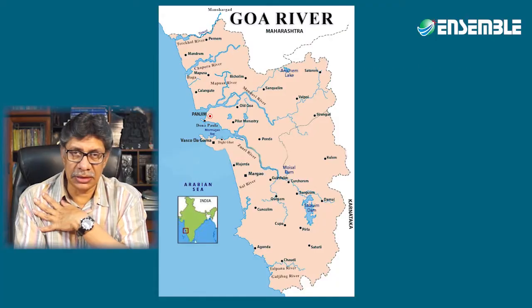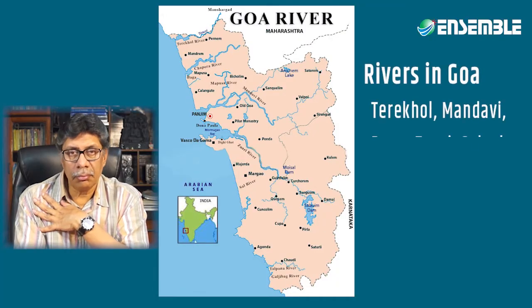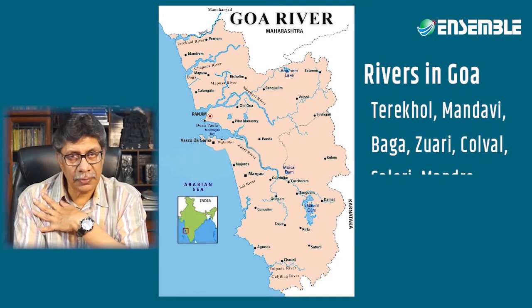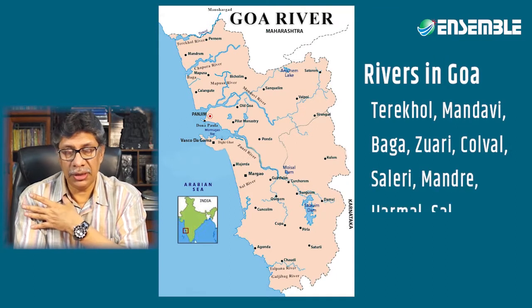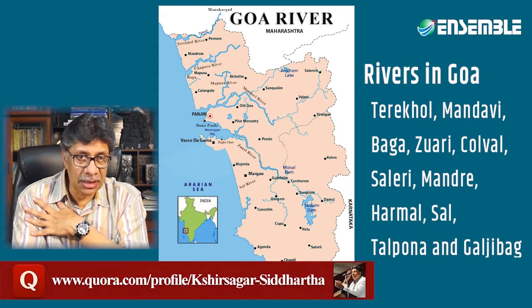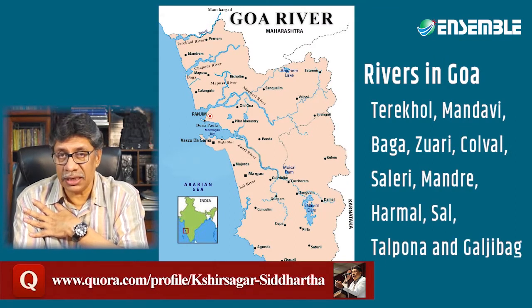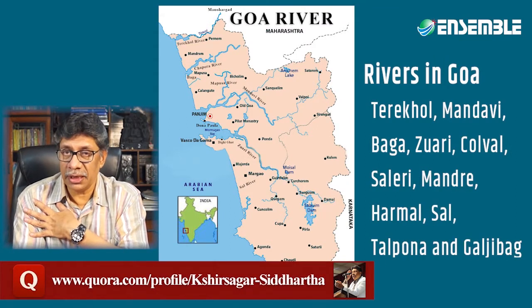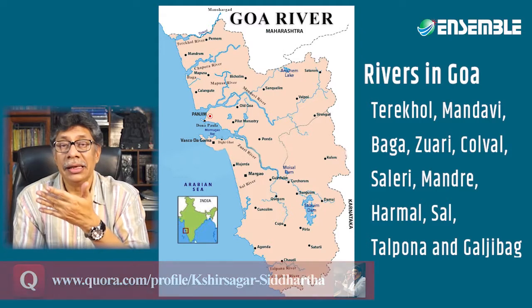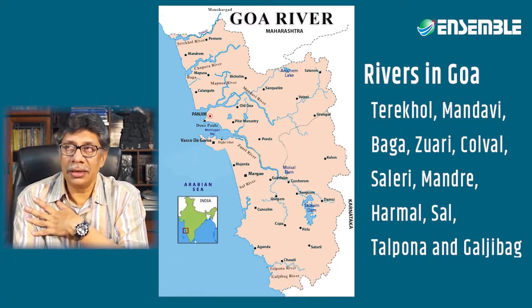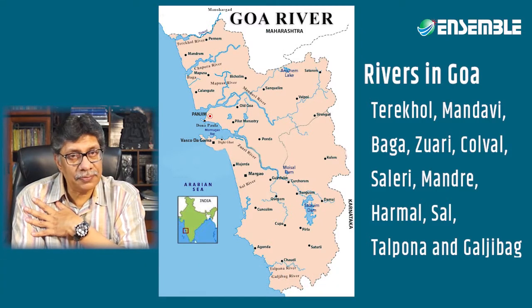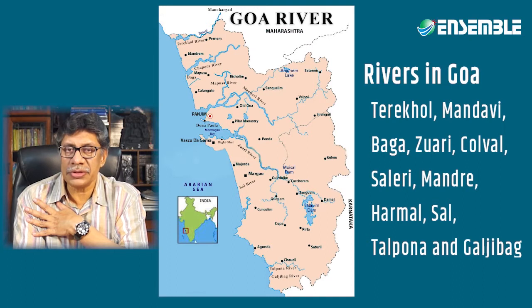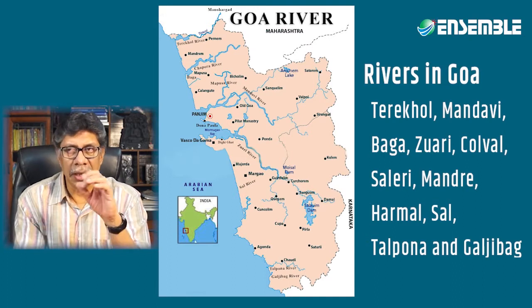Rivers in Goa are short and almost perennial. These include Terekhol, Mandovi, the Baga, Zuari, Kolwol, Saleri, Mandre, Harmal, Sal, Talpona and Galgibag — the 11 rivers of Goa which are known as the lifelines of the state.